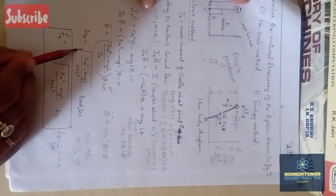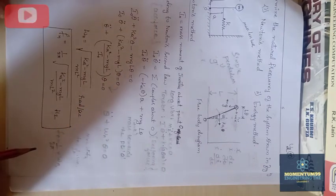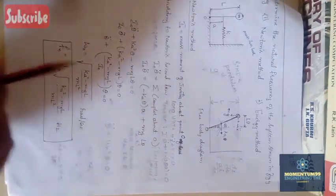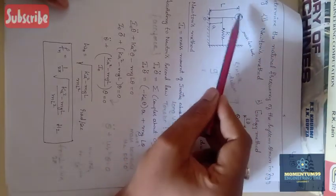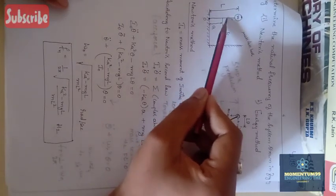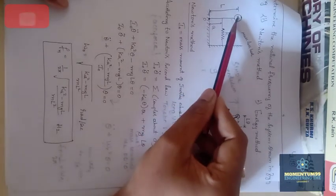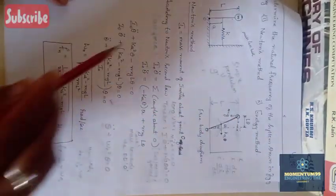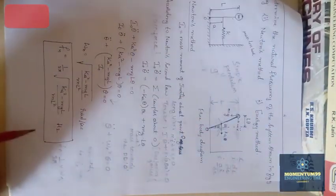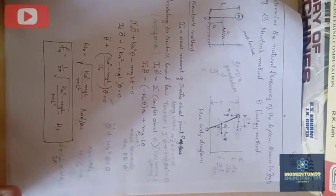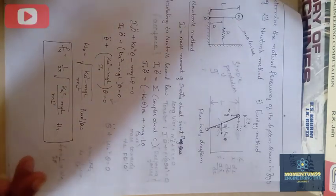Both Newton's method and the energy method yield the same natural frequency. Natural frequency ω_n is in radians per second, and linear frequency fn is in hertz. Also note: when the point of suspension is above the mass and gravity acts towards the suspension point, the mg·l term is taken as positive. Whichever method you use, the natural frequency and linear frequency should have the same value.